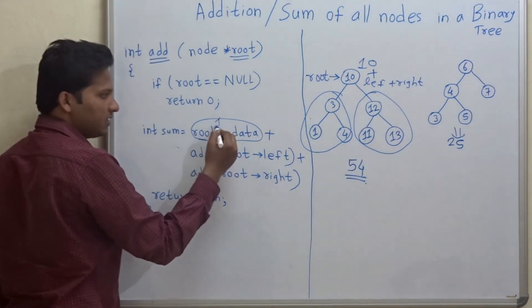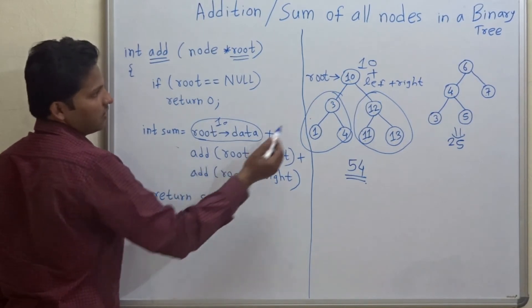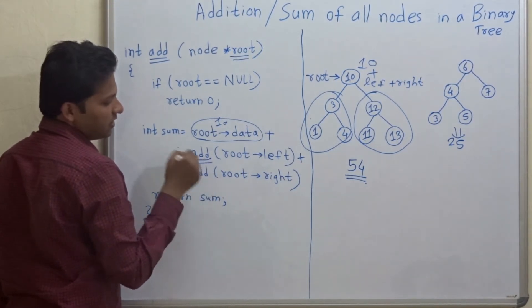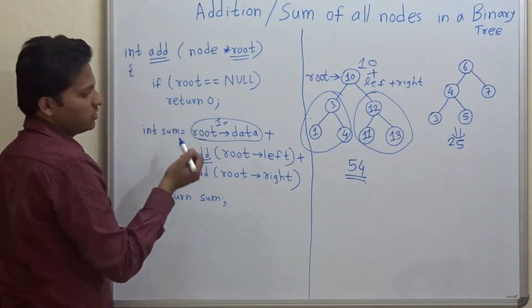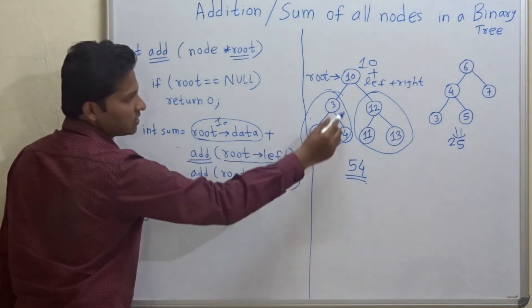So the data that is 10 plus we are passing the left sub tree in the function itself, which is why it is called a recursive function. So add root points to the right sub tree.